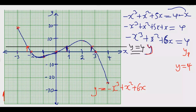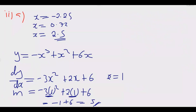On the graph, draw a tangent line to the curve at x = 1. Place a ruler at that point and draw the straight line, then calculate the gradient using rise over run. The change in y is 5 and the change in x is 1, so the gradient m = 5/1 = 5. Acceptable answers are approximately 4.7, 4.8, 4.9, or 5.